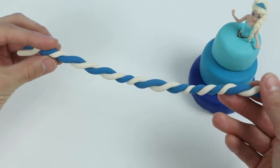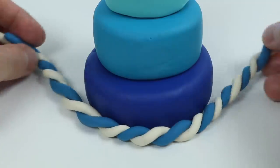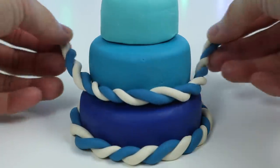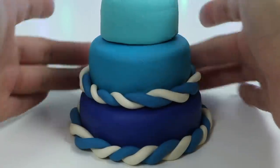Now let's wrap this around the bottom cake layer. Let's do the same for the other cake layers. Give me a minute.